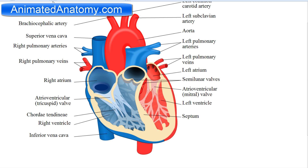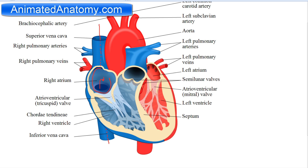Now let's look at the cross section of the heart. The blood from the superior vena cava comes here to the right atrium, and blood from the inferior vena cava also enters the right atrium. When the myocardium here is relaxed, the volume of the ventricle increases and blood can enter the ventricle. The chordae tendineae pull the valve inwards, opening it, so blood from the atrium can enter the ventricle.